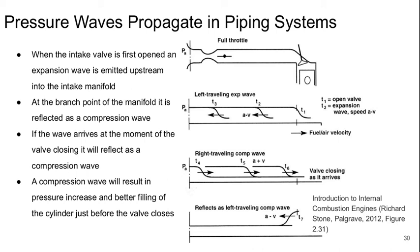Finally, let's think about how pressure waves move around in these intake and exhaust piping systems, specifically the intake system. When we open the intake valve, we generate an expansion wave that is emitted upstream into the intake manifold and starts moving upstream. There's a branch point somewhere in the manifold where separate tubes run to each cylinder and then come together. When the wave hits that change in area, you get a reflection — a compression wave coming back towards the cylinders. If the length is just right, that compression wave arrives at the moment the valve is starting to close.